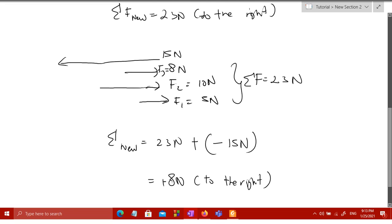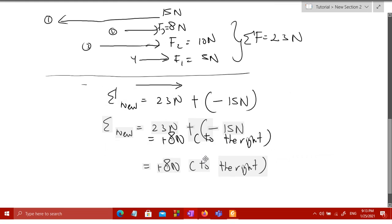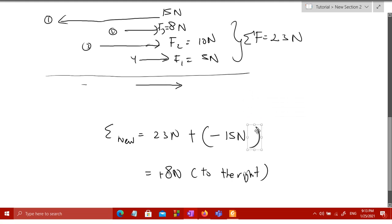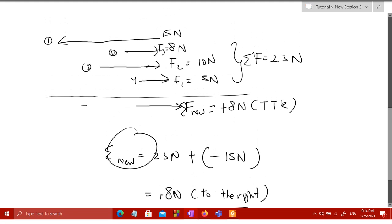What I mean by a single force vector is: you can see here, this is one, two, three, four forces. I can transform this into just a single one, which is 8 Newton. Let me shift this over here. This is the new sigma F, which is positive 8 Newton to the right. Of course, you must write it in long form. With these four force vectors, you can use this single one to represent the summation of the forces.